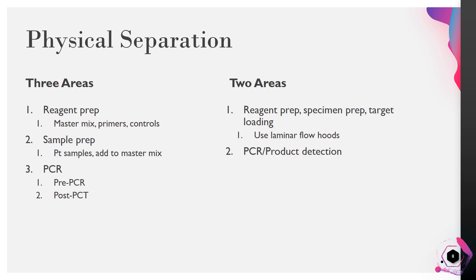If space allows, a molecular lab would ideally have three physically separate spaces: one for reagent preparation, one for sample preparation, and one for PCR and analysis. If space does not allow, two separate areas can work — one for preparing reagents and specimens, and the other for PCR and analysis. In that case, the use of laminar flow hoods can help keep reagent prep and sample prep separated and reduce the probability of contamination.